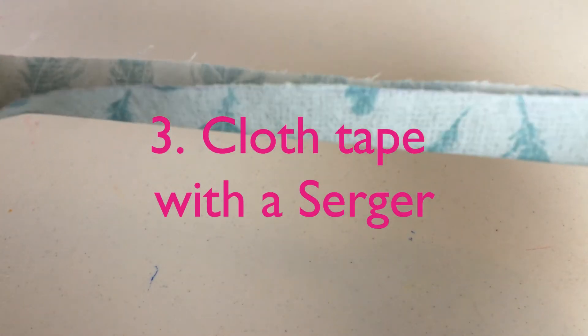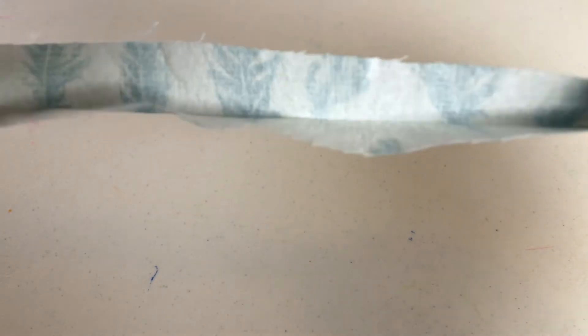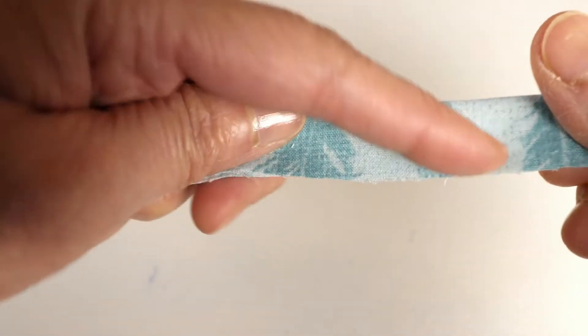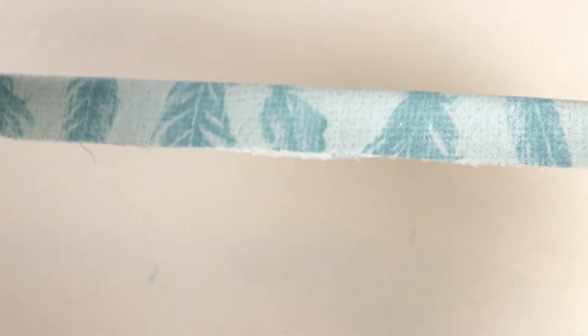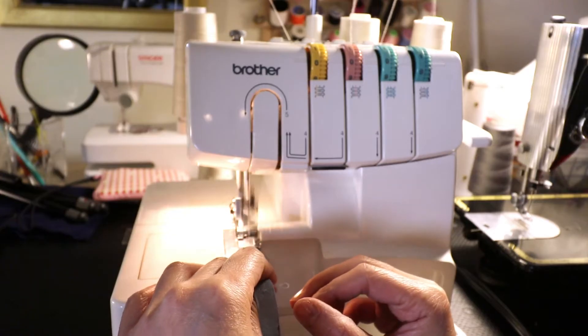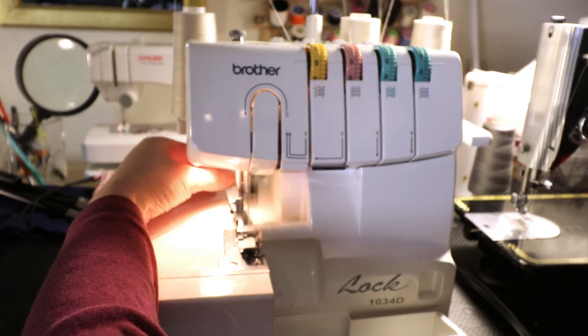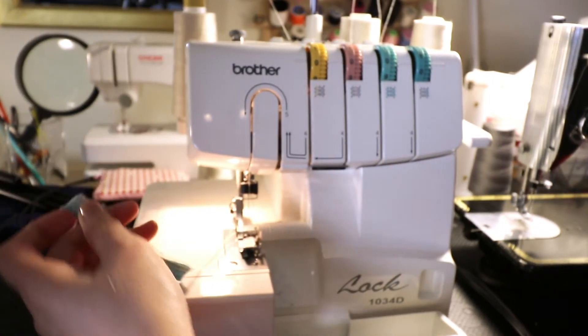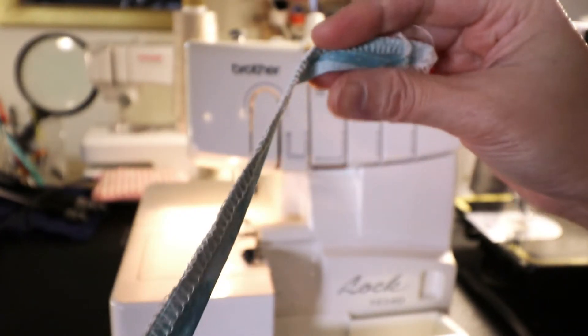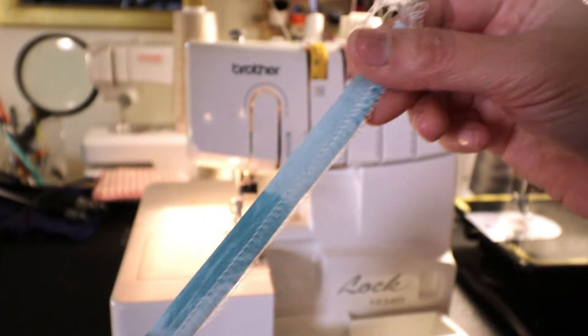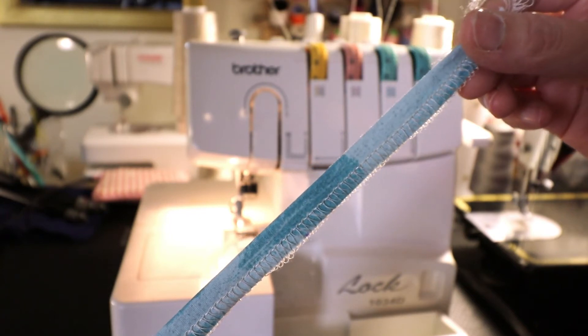Another way to make the closed tape is to use a serger. You can use the 45 degree bias cut or the straight cut and you can just fold it in half and serge on the outside. So you can use this as a closed tie too instead of elastic and if you use a matching color thread it will look nicer.